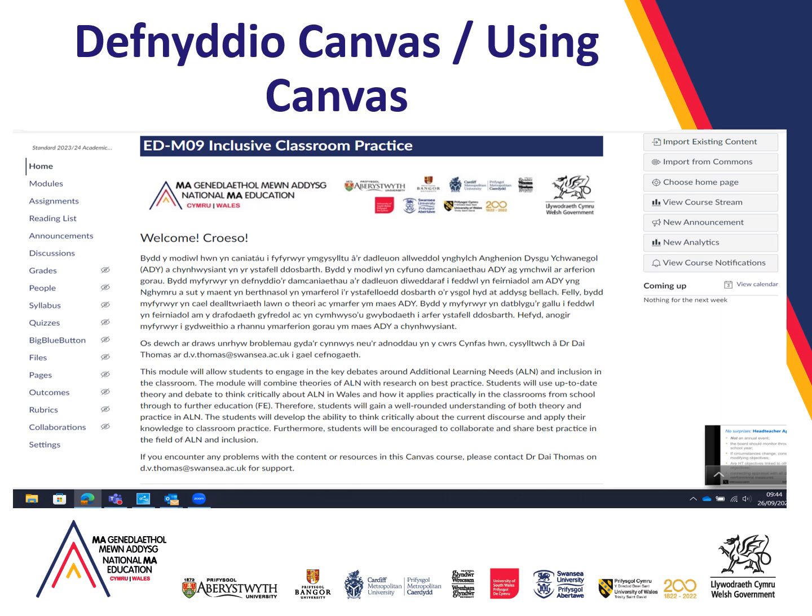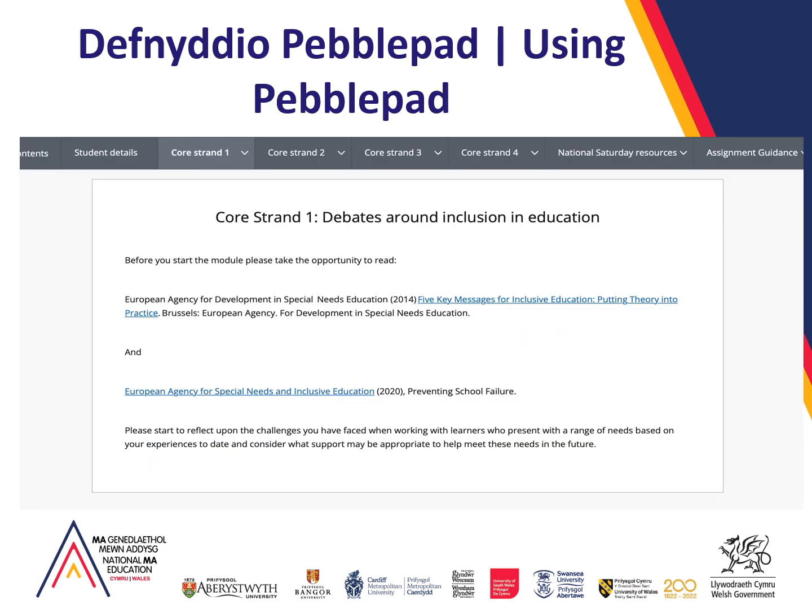Canvas is the Swansea University specific virtual learning environment. The other area where you will get information will be Pebblepad, or PLP, which you will find when you log into your Education Workforce Council account, located in your Resources section. When you open up the module on Pebblepad, you will see a toolbar at the top of the screen showing course strands one, two, three and four, which we will work through in an asynchronous fashion. Clicking on each course strand will open up the sub-strands that come underneath.